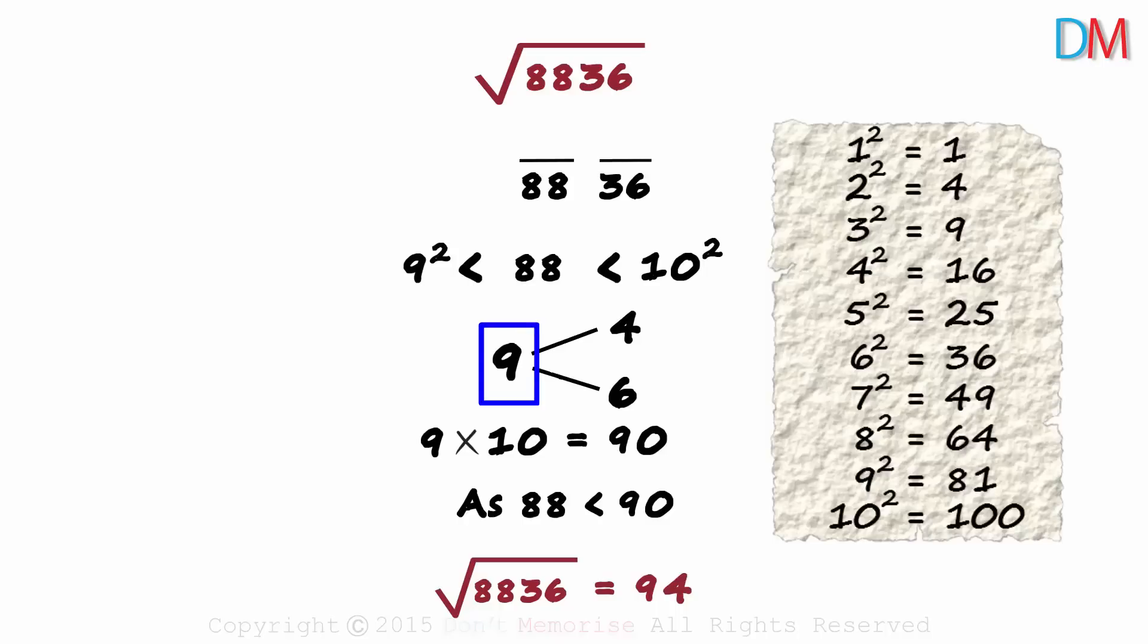So the 10th digit is easily found. And for the units digit, we find the product of the 10th digit with its successor and compare it with this number in the middle. If the number in the middle is smaller, we take the smaller one here. And if it's larger, we take the larger one here.